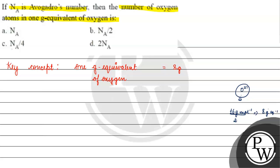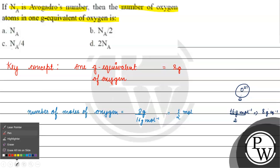So we found the equivalent mass. Now if we calculate the number of moles of oxygen, it will be equal to mass by atomic mass. The atomic mass is 16 gram per mole. Solving this, we get half mole.